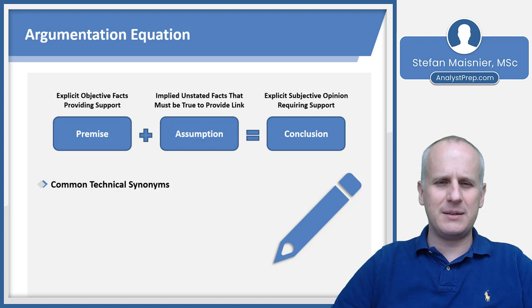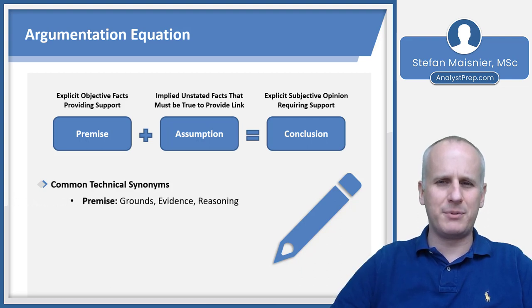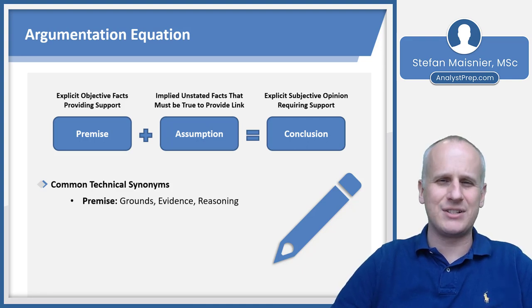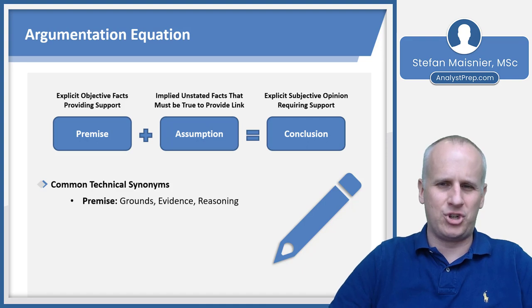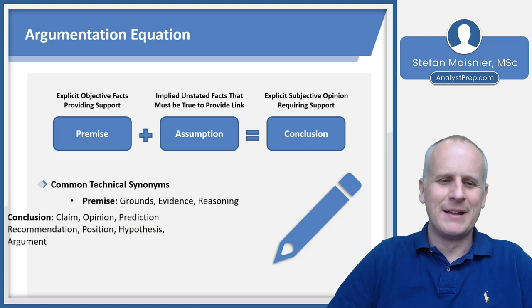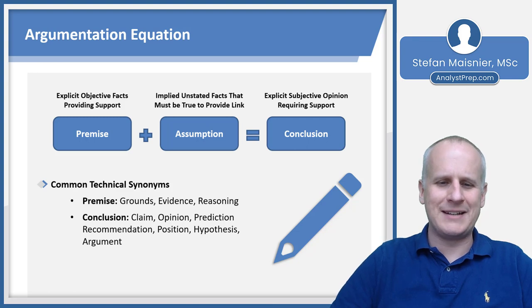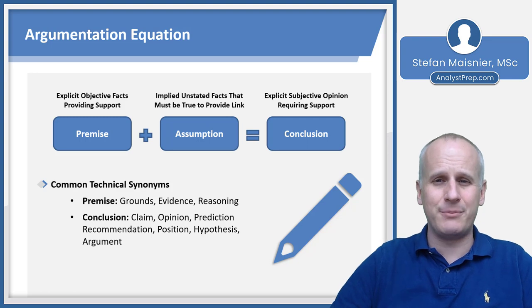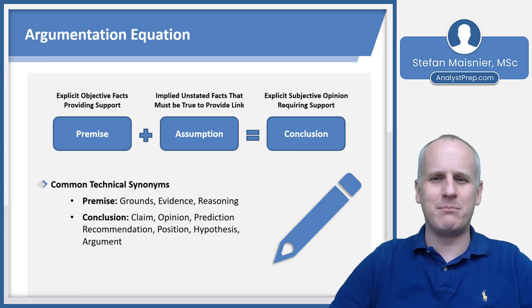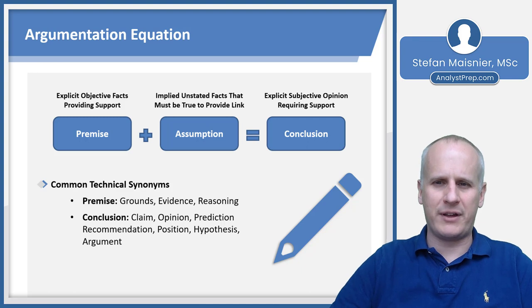There are some technical synonyms for these terms. For the premise, you could also see: grounds, evidence, reasoning, facts, data — anything indicating an objective statement intended to support. For the conclusion, you could see: claim, opinion, prediction, recommendation, position, hypothesis, theory, or argument. It's ultimately the thing that you don't necessarily believe without some sort of evidence.